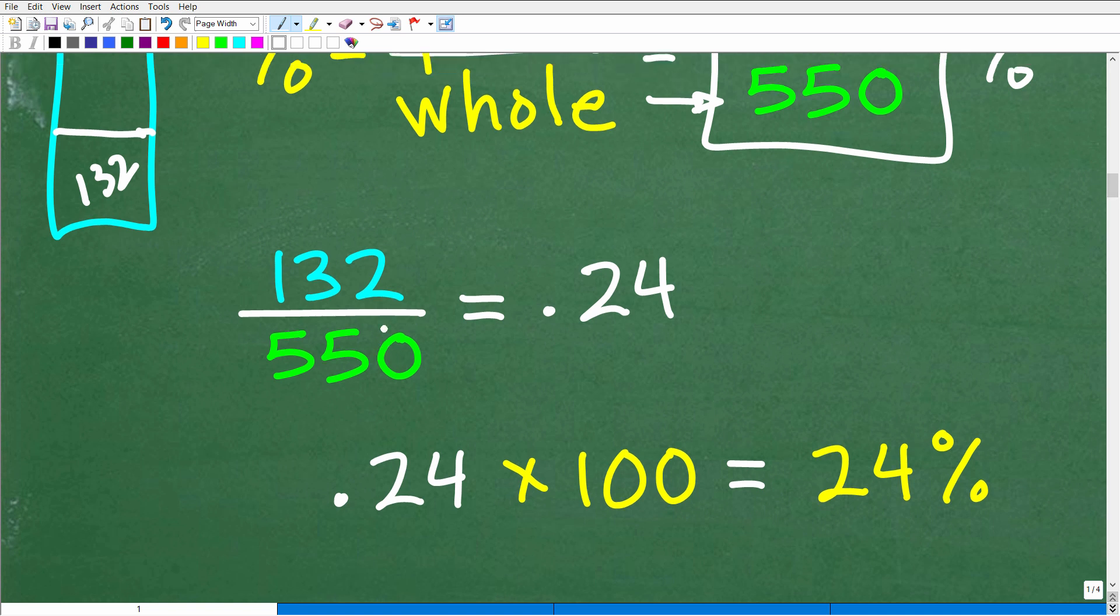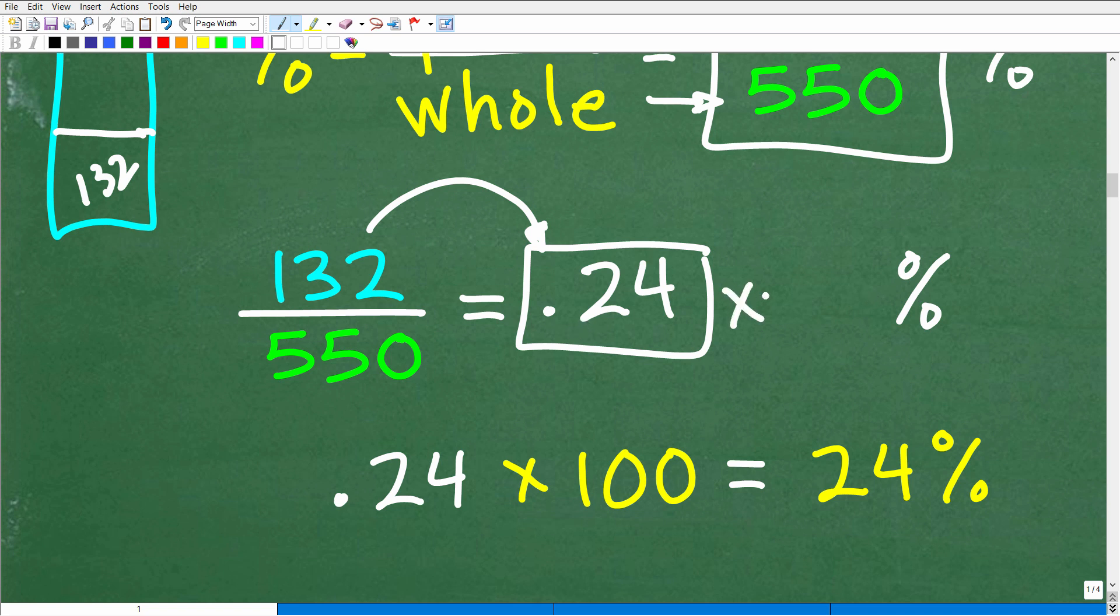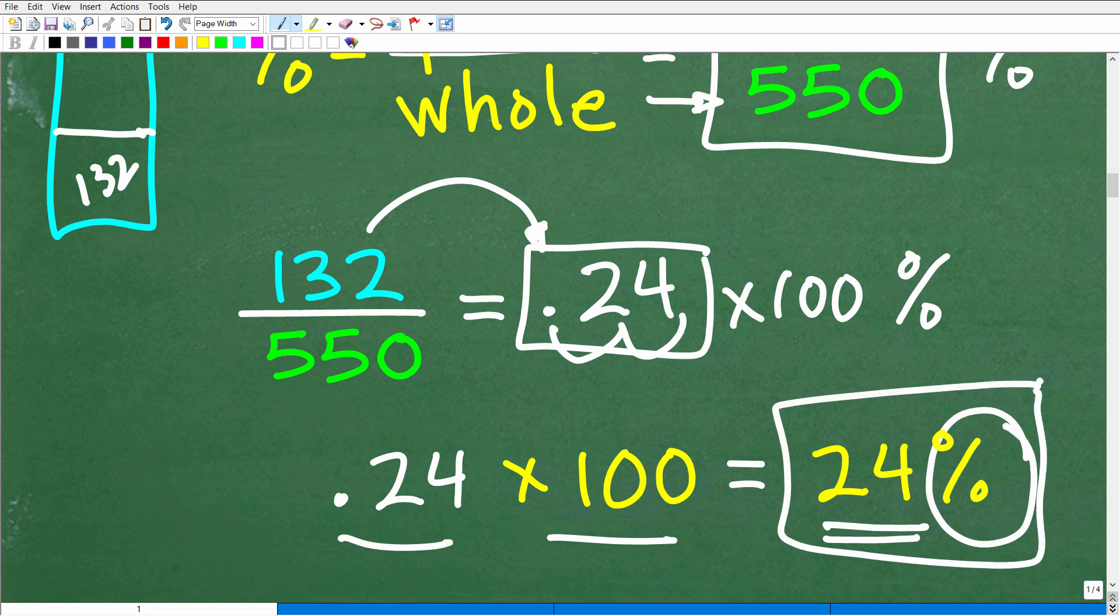But here, this is a fraction. What we want is a percent. So we're going to take this fraction and we're going to convert it to a decimal. So we're just going to go into our calculator, take 132, divide it by 550, and we get the lovely decimal, 0.24. All right, so again, we want a percent. We're not there yet, but we do have a decimal. So how can I convert a decimal to a percent? Easy, just multiply by 100. So 0.24 times 100, which is effectively the same thing as moving a decimal point over two places to the right, and you get 24%. So that is our final answer.